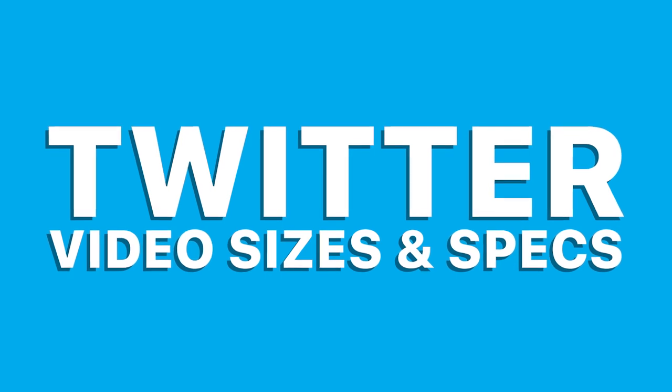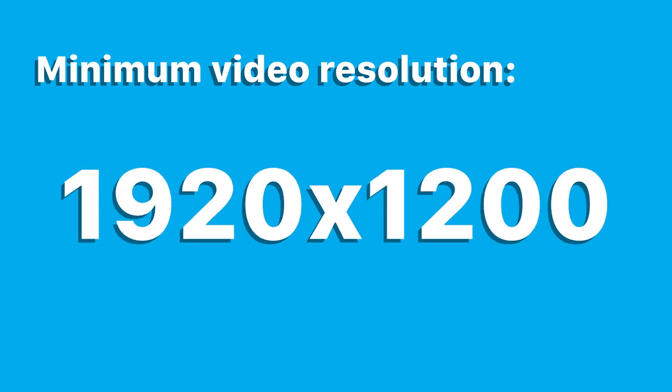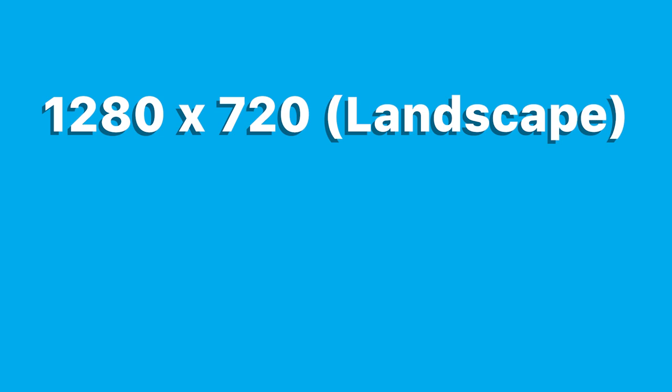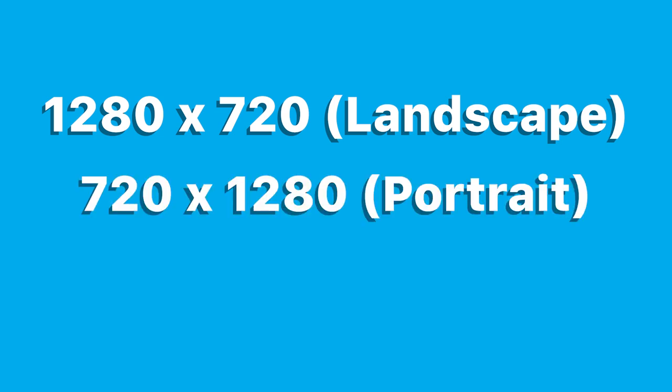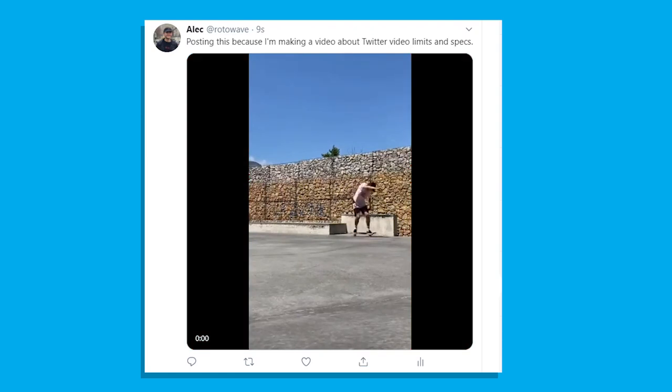We're going to cover Twitter's video sizes and other specifications. Twitter's video limit on file sizes can be frustrating, so here are a few pointers. The minimum resolution is 32 by 32. The maximum resolution is 1920 by 1200 and 1200 by 1920. The recommended resolutions and aspect ratios are: 1280 by 720 (landscape), 720 by 1280 (portrait), and 720 by 720 (square). When using these resolutions, those annoying black bars won't show up when you upload a video.